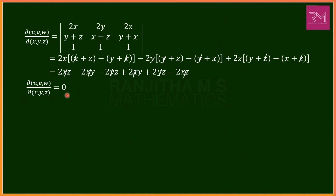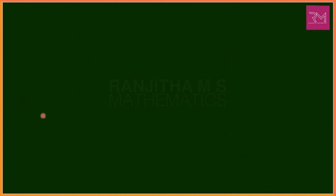This completes the first problem. The important thing in solving Jacobian problems is to expand the determinant value carefully and simplify. We shall move on to another problem.